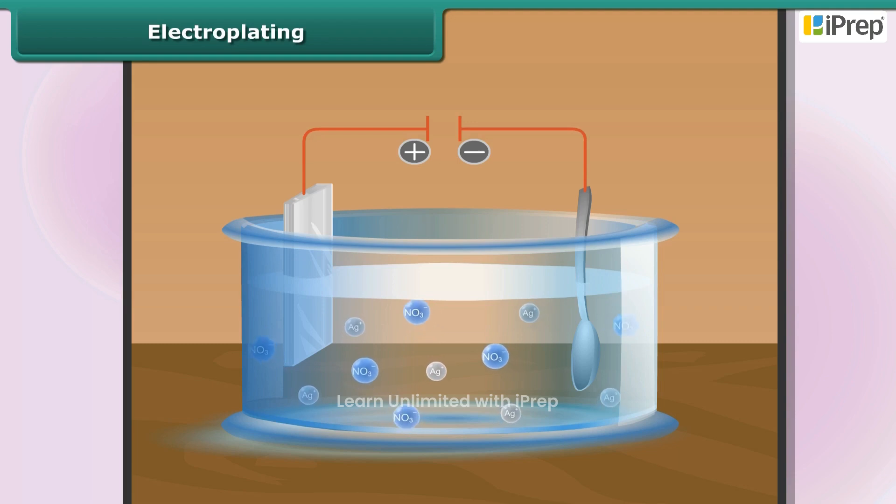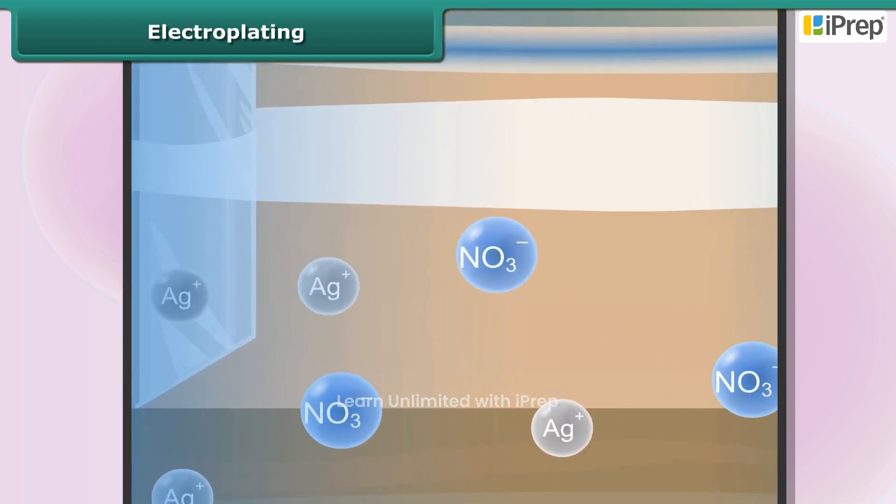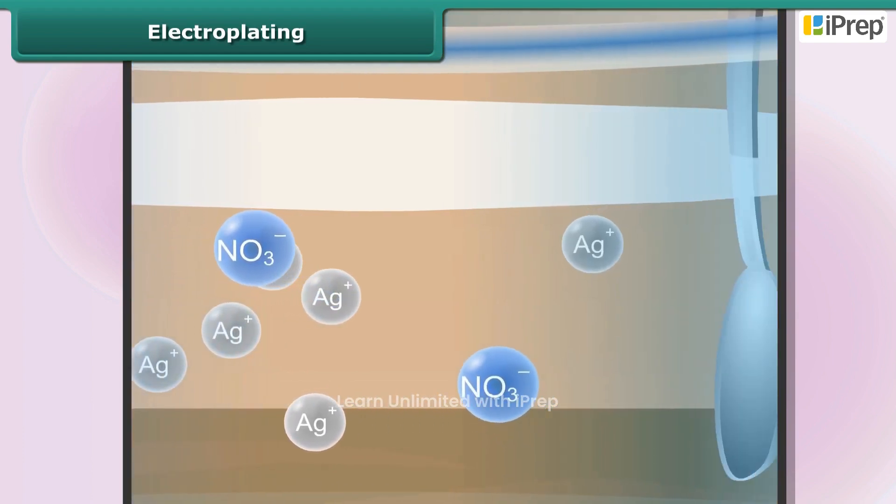The salt contains the ion of the anode metal, for example silver nitrate. As soon as electric current starts flowing through the solution, electrons begin to escape from the silver anode. This results in the formation of positively charged ions.